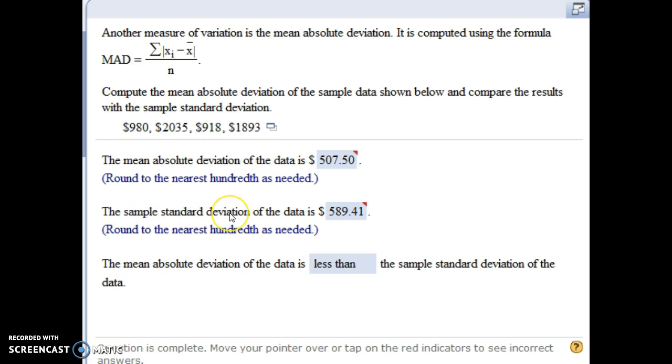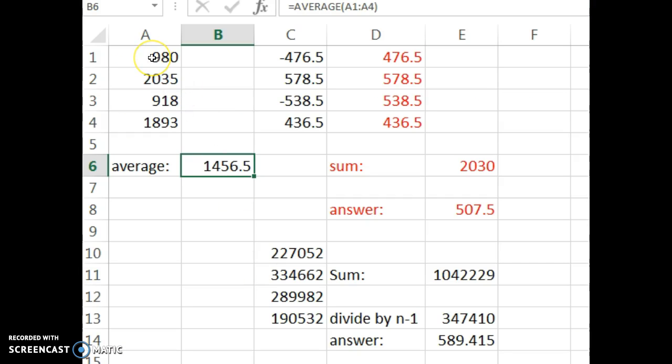And then for the sample standard deviation, you can just have Excel or StatCrunch spit that out for you. To work it out by hand, you again start off the same way. Find the average of the values, subtract each value minus the average. But instead of doing the absolute value, the standard deviation has you square each of these values. So that's what I did down here. I squared the four values here.